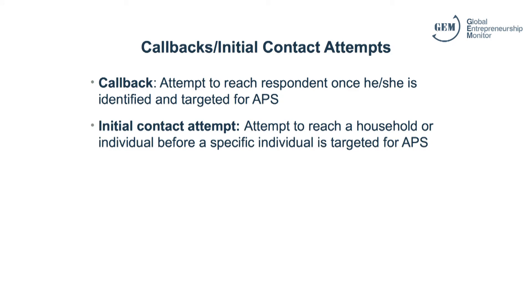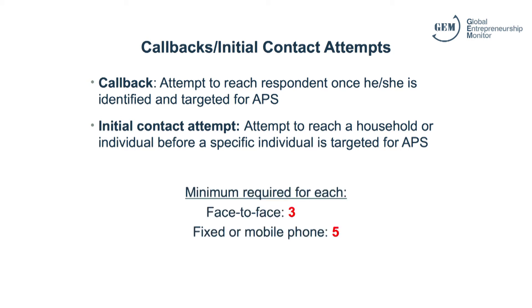Yet another aspect of survey design is the number of callbacks and contact attempts. A callback is the attempt to reach a respondent once he is identified and targeted for the APS, as opposed to the attempt to reach a household before a specific person has been selected. GEM requires a minimum of three attempts if your team is conducting face-to-face sampling, and five if using fixed or mobile phone. But you can certainly choose to make more calls and revisits, depending on the value and feasibility.